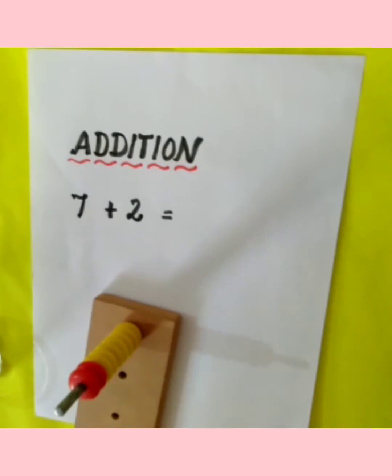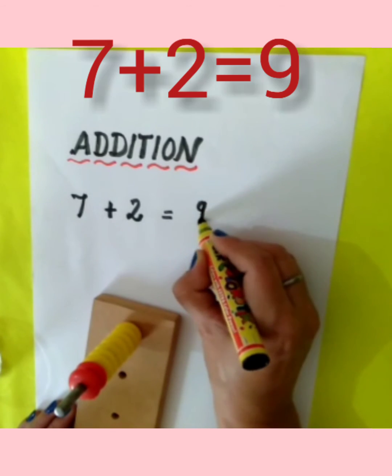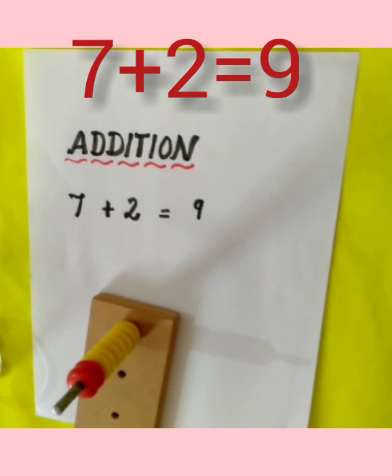So the addition of seven plus two is equal to nine. I hope you understand. Thank you.